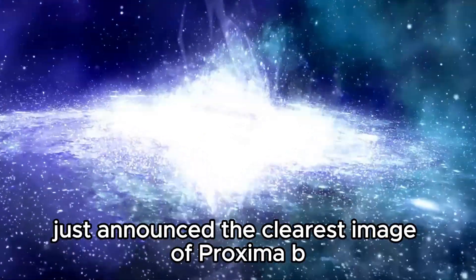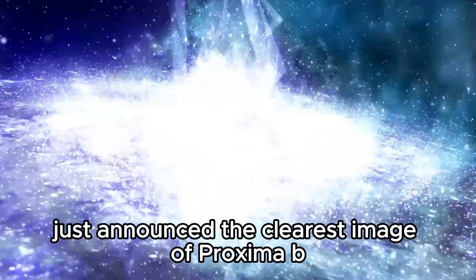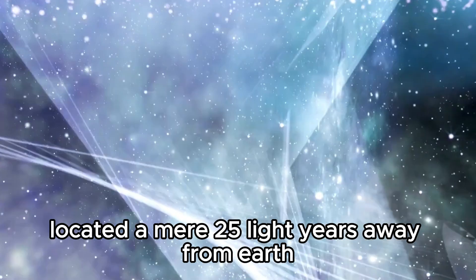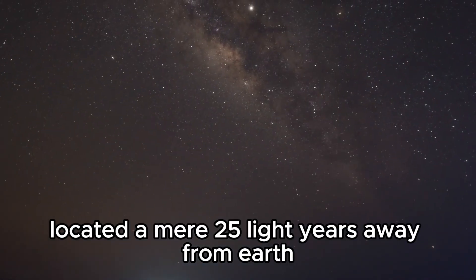The James Webb Telescope just announced the clearest image of Proxima b ever seen. Proxima b, a celestial body located a mere 25 light-years away from Earth.